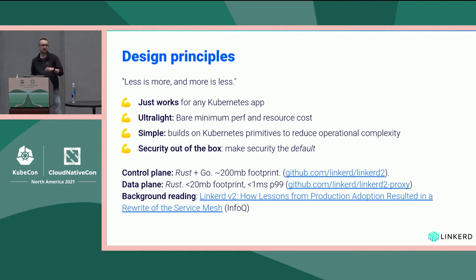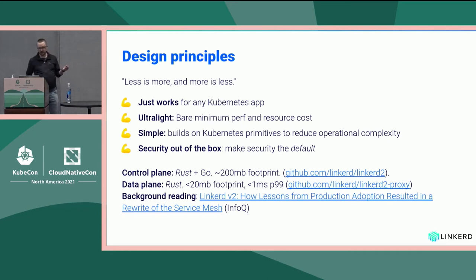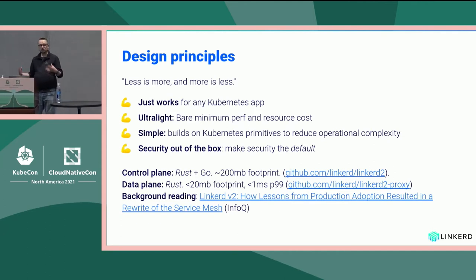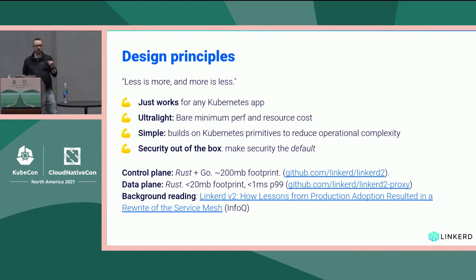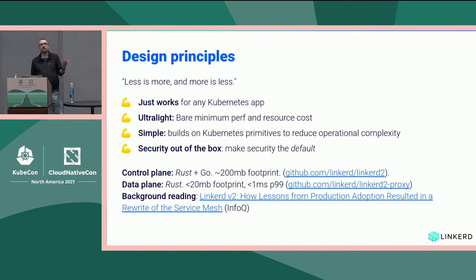We don't want to increase cost too much — we can't double your CPU and memory usage by adding Linkerd. It has to be a really thin add-on. We want to build into the Kubernetes ecosystem and primitives as much as possible. We don't want you to install 50 CRDs to get started — maybe five or so. And security has to be on by default. It can't be something you need Buoyant's professional services for. Linkerd has to do this in its core open source offering.